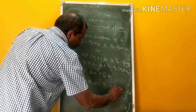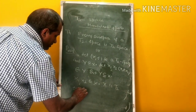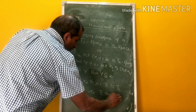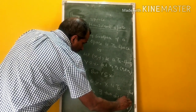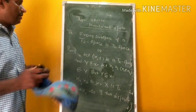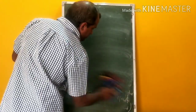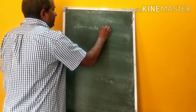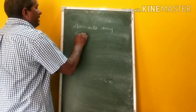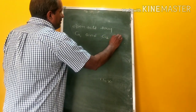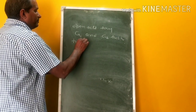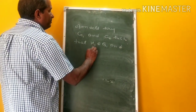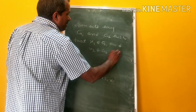X is given to be a T2 space. So there exist two disjoint open sets, say G1 and G2, such that x1 belongs to G1 and x2 belongs to G2, and G1 intersection G2 is empty.